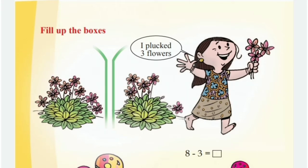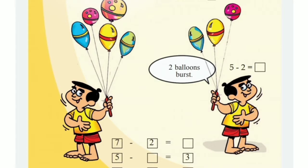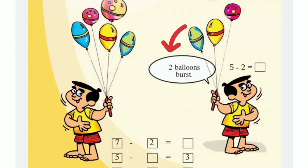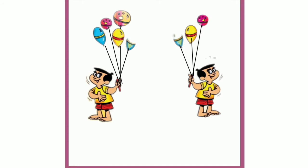Then all of you look at the second one. Children, do you know the boy? Yes, this is our Sharath, isn't it? Sharath has some balloons — how many balloons in his hand? Count: 1, 2, 3, 4, 5. There are 5 balloons in his hand. But 2 balloons burst. So how many balloons are left in his hand? Yes, 3 balloons.